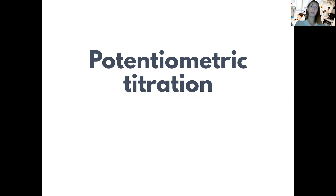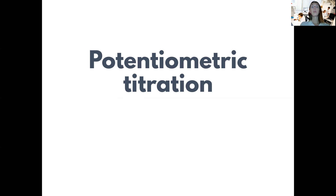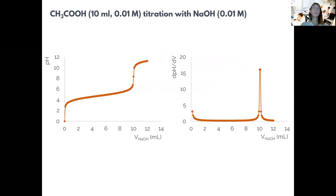So what is potentiometric titration? It is about determining the endpoint of the titration reaction with potentiometric measures — by potentiometrically measuring the change of the concentration of the analyte or the titrant in the solution. One of the most simple examples of applying potentiometric titration is in the context of acid-base titration.